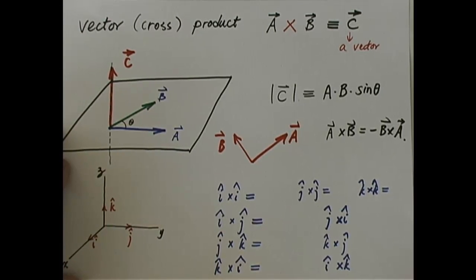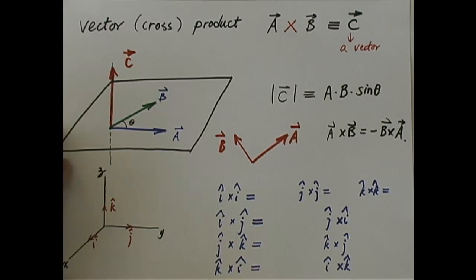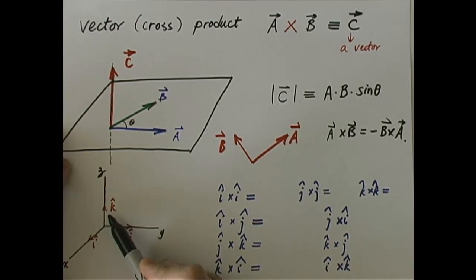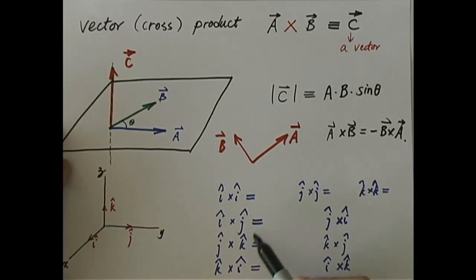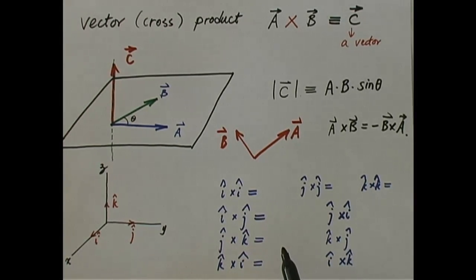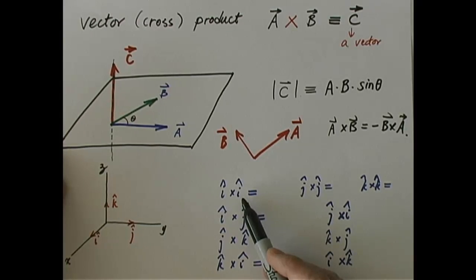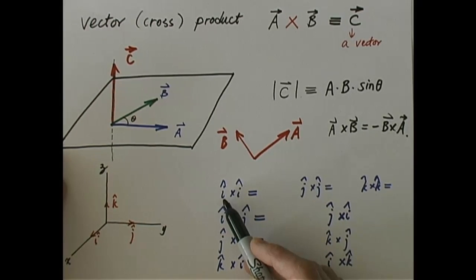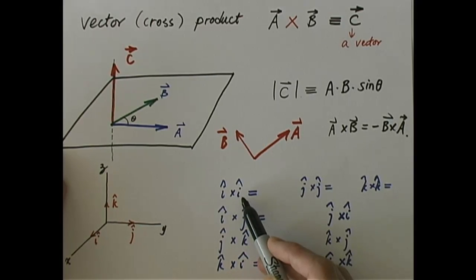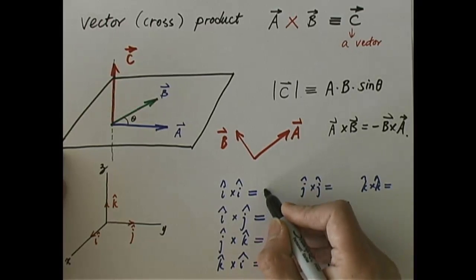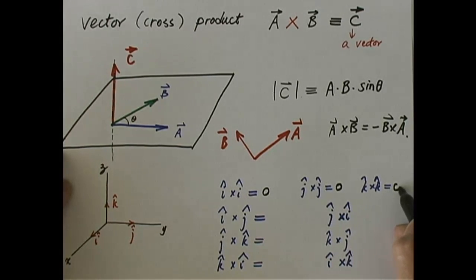Given the cross product definition, we can figure out the vector product between the unit vectors I, J, and K. Any vector can be expressed in terms of I, J, and K components, so if I know how to do I cross I, I cross J, and so on, I can always find the vector product of A cross B. First, what is I cross I? The magnitude depends on sine of the angle between the two vectors. Two identical vectors have zero angle between them, so sine zero equals zero. Same for J cross J and K cross K.